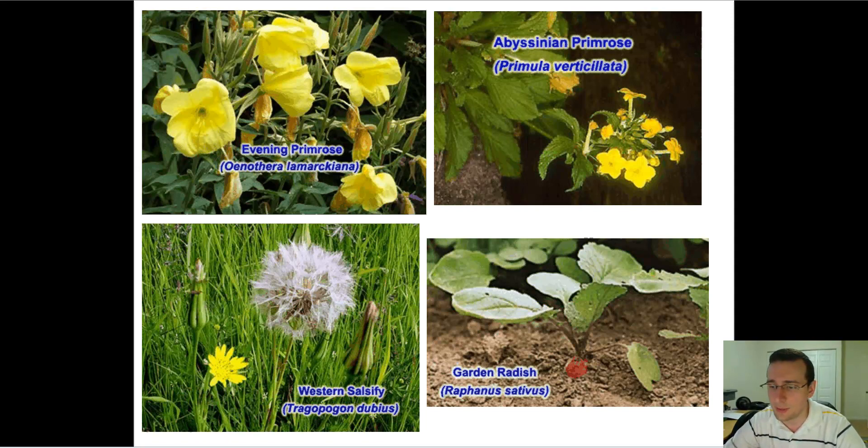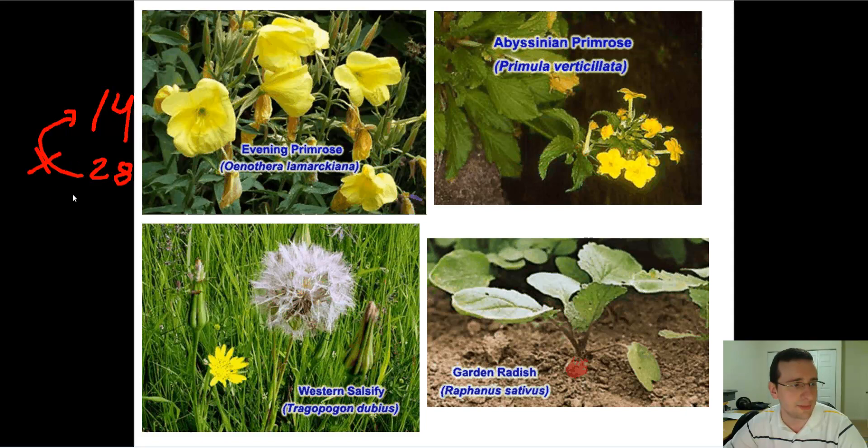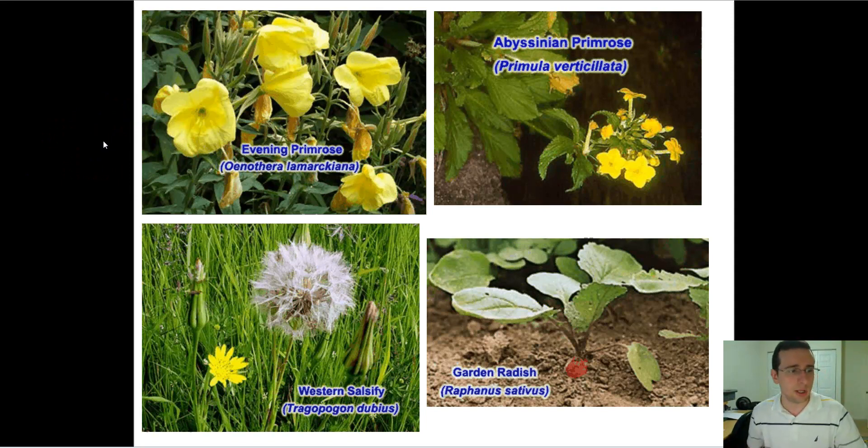In 1905, a study on evening primrose, Oenothera lamarckiana, identified a variation with double the number of chromosomes. Normally the primrose would have 14 chromosomes, but scientists found a variant with 28 chromosomes. They noticed that this variant could not cross with the original, so it seemed to be a separate species even though it looked exactly the same. This is evidence for sympatric speciation by stasypatric speciation.